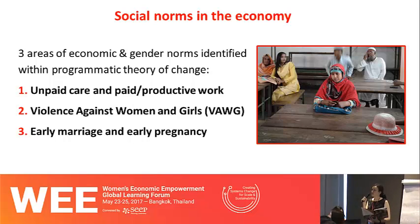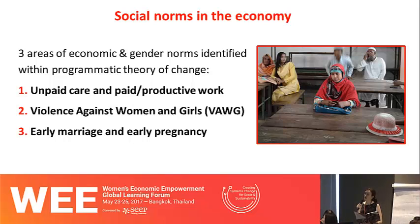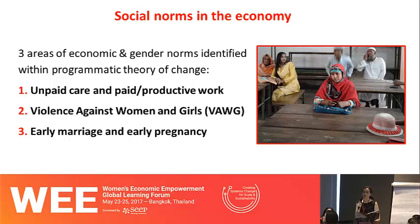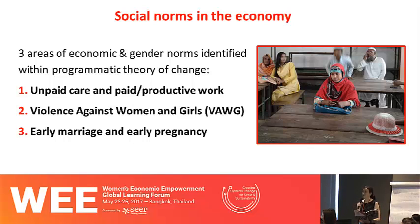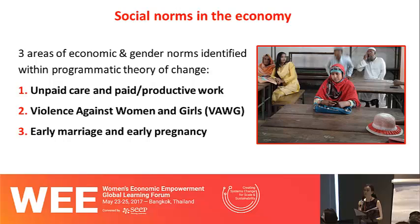There were three areas of social norms in the economy which we pulled out to work on in this programme. The first is around unpaid care and paid and productive work. The second is around violence against women and girls. The third is around early marriage and early pregnancy. Looking at social norms related to sexual and reproductive health rights is a well-established area of work, but looking at how those norms relate to social norms in the economy is less well-developed — and that's where we wanted to focus.